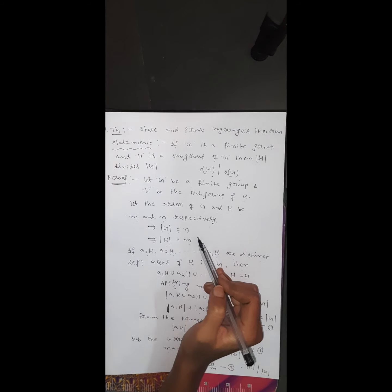Therefore the order of H divides the order of G. This completes the proof of Lagrange's theorem. Statement: If G is a finite group and H is a subgroup of G, then the order of H divides the order of G.